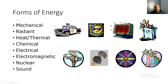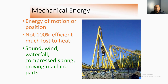Our major forms of energy are mechanical energy, radiant energy, heat and thermal energy, chemical, electrical, electromagnetic, nuclear, and sound. There are pictures representing each form, and we'll talk about each one in detail in the following slides.